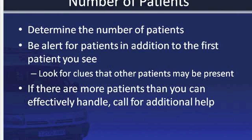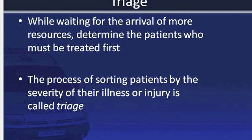At the scene, take appropriate standard precautions, evaluate scene safety, and determine the mechanism of injury or the nature of the patient's illness. After taking these steps, determine the number of patients. The need for additional resources is based on the correct count of patients at any emergency scene. A rollover accident with multiple persons involved may be more difficult to assess. Be alert for patients in addition to the first patient you observe. Look for clues such as toys, diapers, bottles, school books, a purse, or a child safety seat. Ensure you look around the scene — not just at the scene — because some patients may be ejected from the vehicle. The process of sorting patients by the severity of their illness or injury is called triage.